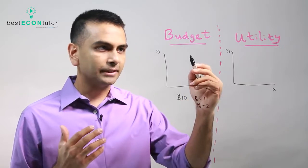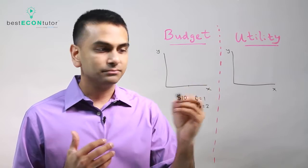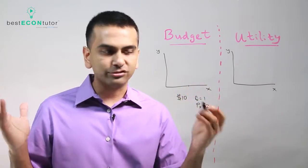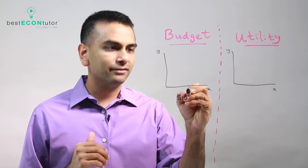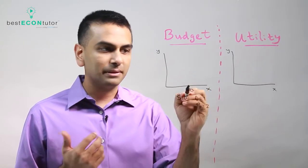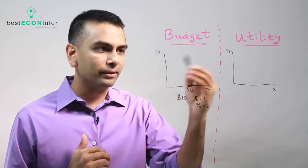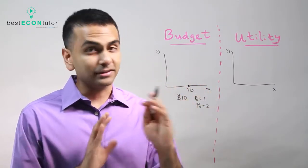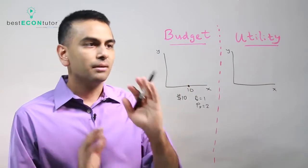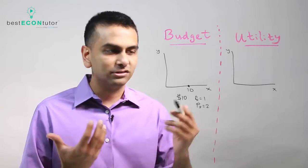If X costs one dollar each, you can buy with your ten dollars — if you wanted to, you could buy all ten of good X. You'd spend all ten dollars on good X and have zero of good Y. Any point on this plane is a bundle. It's similar to a PPF from the beginning of the course, but now it's for the consumer's point of view — it's really about their budget constraint.